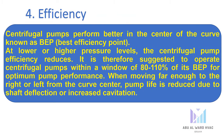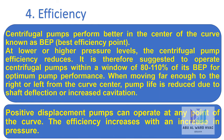The fourth aspect is efficiency. Centrifugal pumps perform best at the center of the curve, known as the Best Efficiency Point (BEP). At lower or higher pressure levels, centrifugal pump efficiency reduces. It is suggested to operate centrifugal pumps within 80 to 110 percent of BEP for optimum performance. Moving far from the curve center reduces pump life due to shaft deflection or increased cavitation. Positive displacement pumps can operate at any point of the curve, and efficiency increases with an increase in pressure.